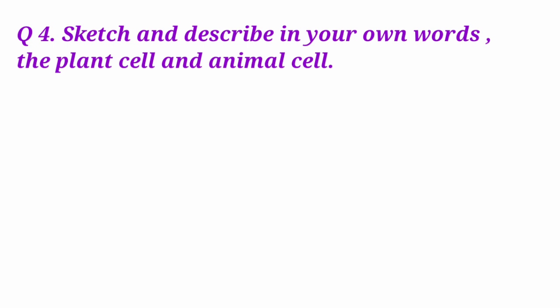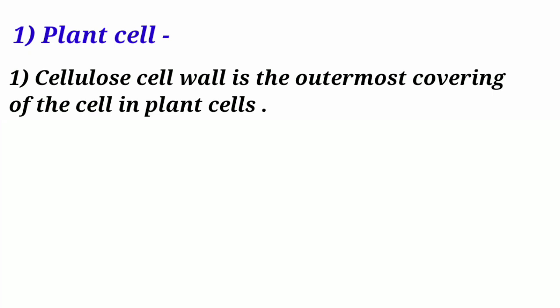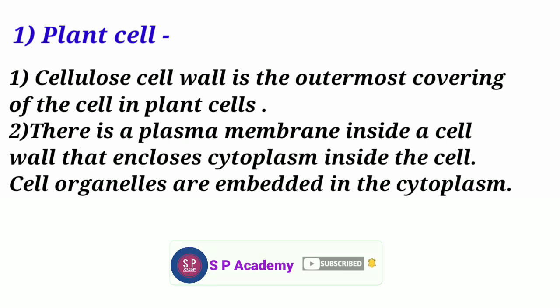Question 4. Describe in your own words the plant cell. Answer: Plant Cell. Cellulose cell wall is the outermost covering of the cell in plant cells. There is a plasma membrane inside a cell wall that encloses cytoplasma inside the cell. Cell organelles are embedded in the cytoplasma.